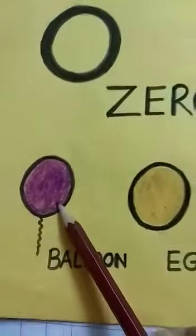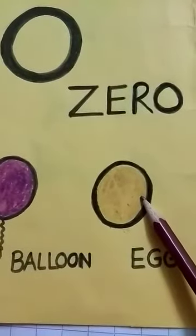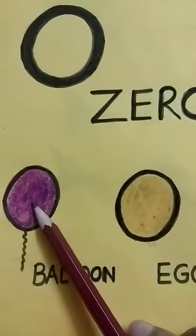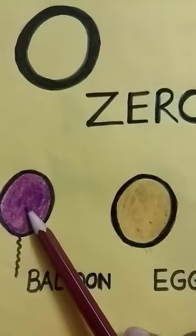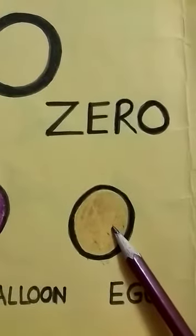Zero. This is a balloon and this is an egg. You know the shape of a balloon looks like zero, and the shape of an egg also looks like zero.